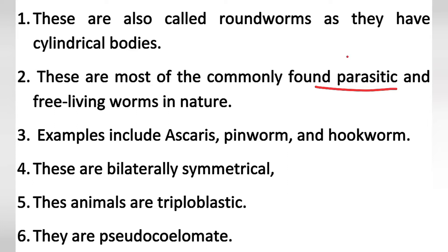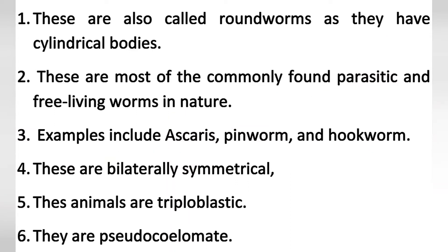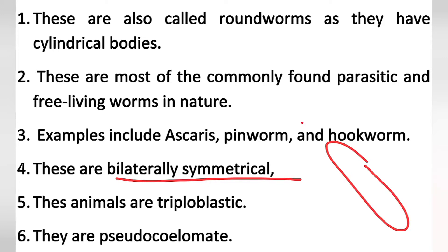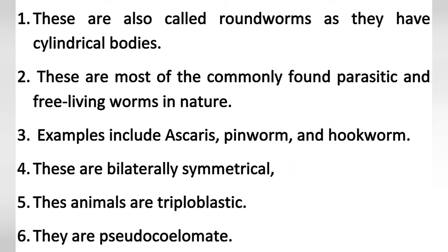The most common examples are Ascaris, pinworm, and hookworm. Ascaris parasites live in the human small intestine. Next point: these are bilaterally symmetrical, as we can cut these worms along a plane of symmetry. These animals are triploblastic.